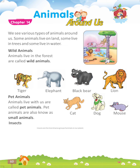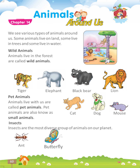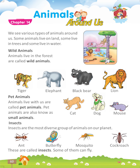Insects. Insects are the most diverse group of animals on our planet. Examples include Ant, Butterfly, Mosquito, and Cockroach. These are called insects. Some of them can fly.